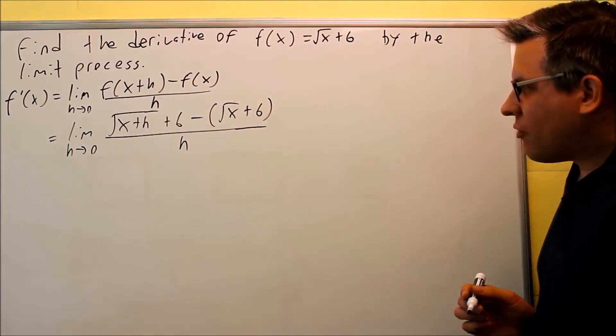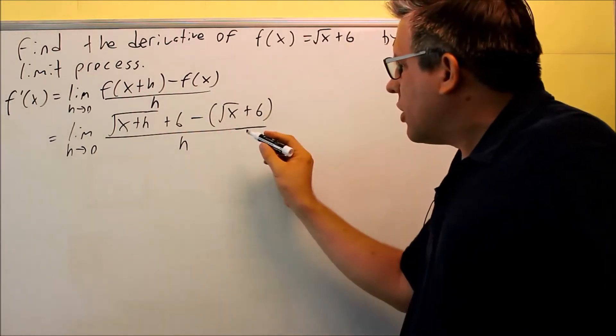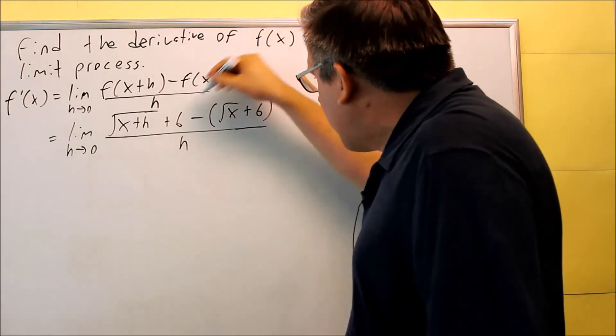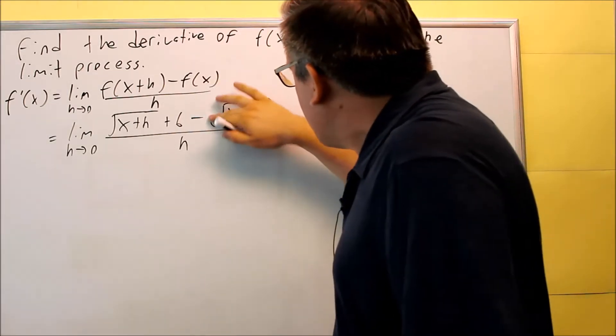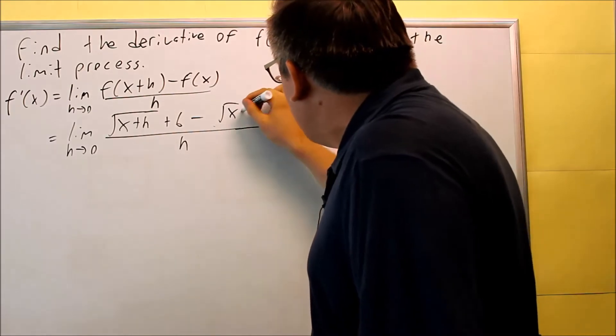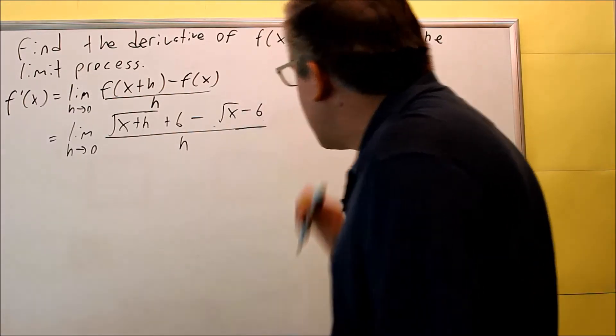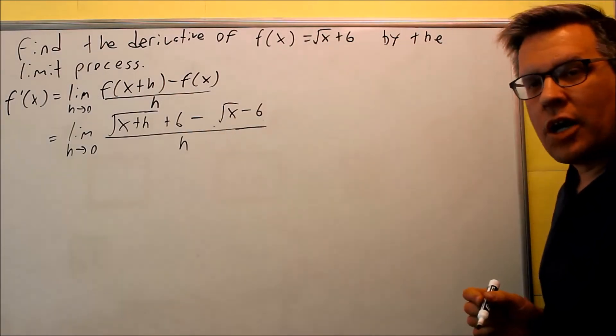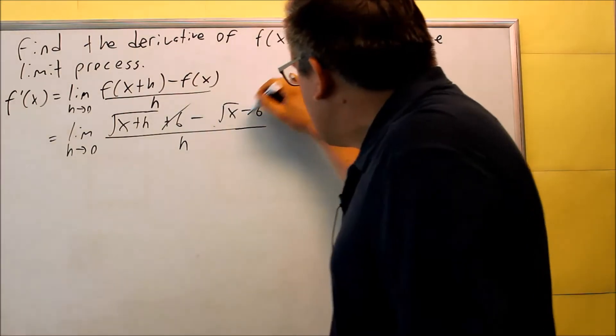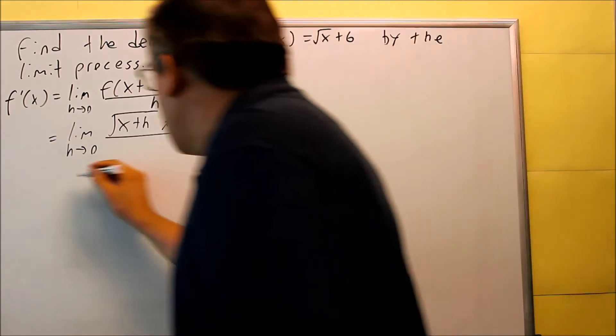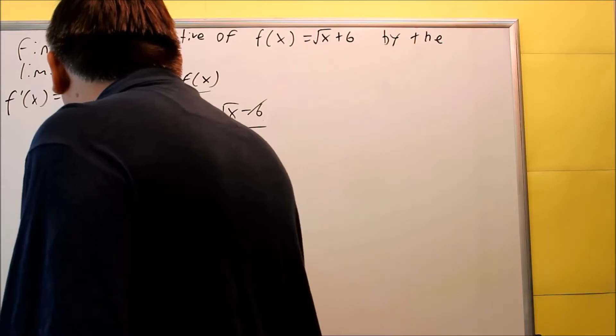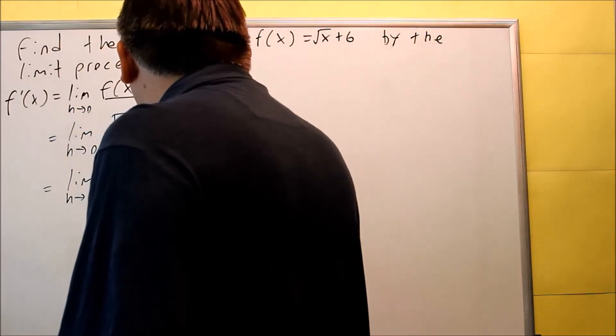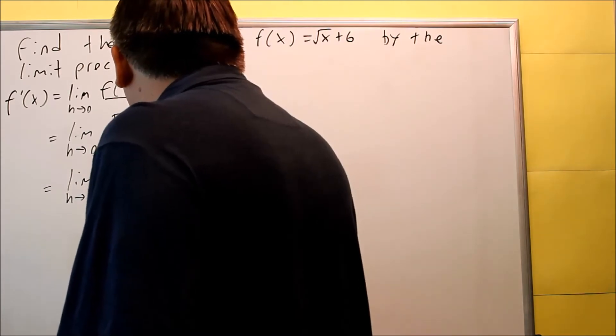Alright, now as far as simplifying is concerned, can't do too much here. I can distribute the minus sign through. Let's go ahead and do that right now. I have a minus sign with the parentheses, but I'm going to go ahead and just clear this out and remove the parentheses to make it easier. So now we have this. I've subtracted both things. Both of them end up having a minus next to it. And I can cancel out the 6 and negative 6. So now I'm down to this one: the square root of x plus h minus the square root of x, all over h.